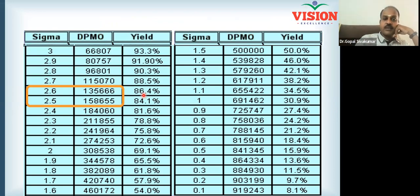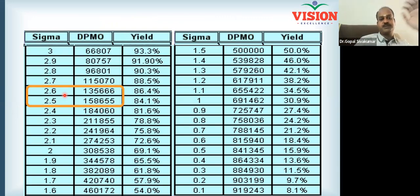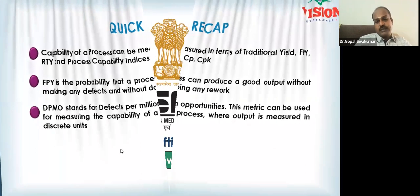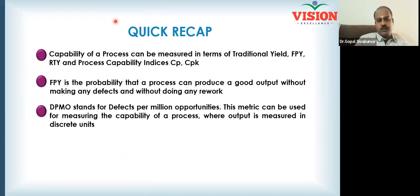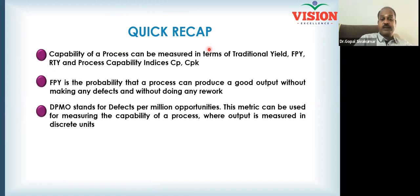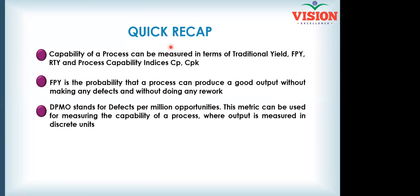So we have to say DPMO, percentage, sigma level — all of them are different. Sigma level has short term and long term, differing by 1.5. We have to look at yield, first pass yield, throughput yield, and DPMO, and how to calculate DPMO. This completes the measure phase. You have to look at baseline performance — yield, DPMO, sigma level, and other metrics.